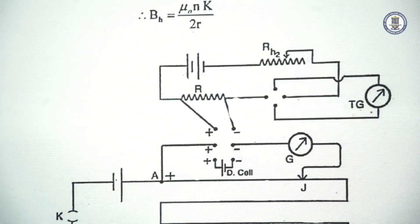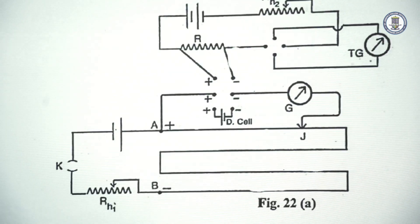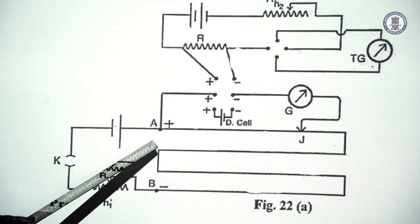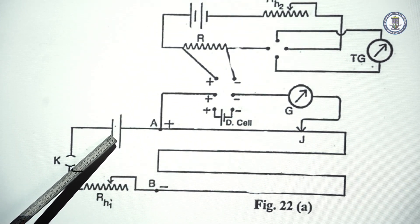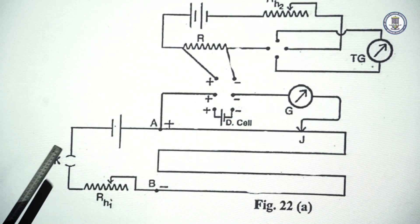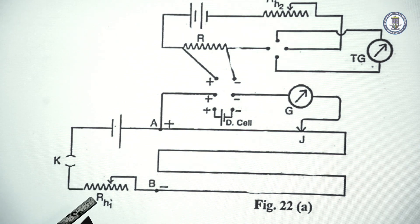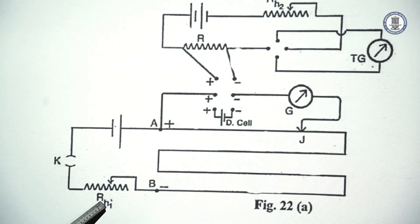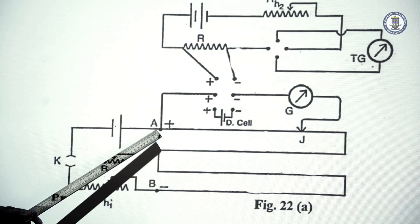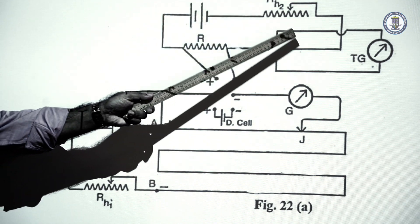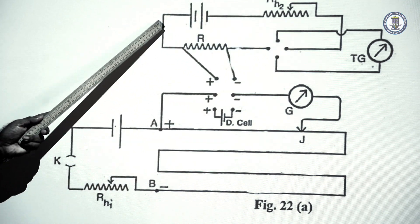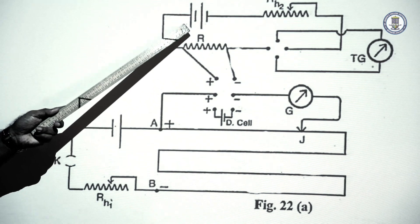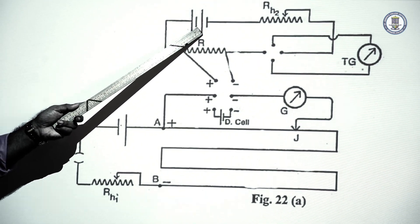Now, the experimental setup: we have the potentiometer wire AB. In the primary circuit, we are connecting an accumulator E, a key K, and a rheostat RH. In the secondary circuit, we are having a resistance R.